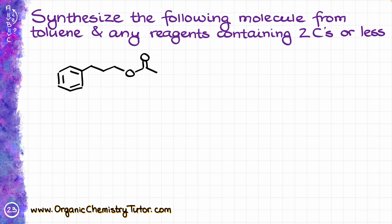First of all, let's quickly remind ourselves what toluene is. Toluene is this molecule — it's a benzene ring with a methyl group sitting on it. I can see right away that my toluene maps onto my final product, my target molecule, right over here. I'm also noticing that I have two two-carbon units that I'm going to be adding: one two-carbon unit is right here, and the other two-carbon unit is going to be right there.